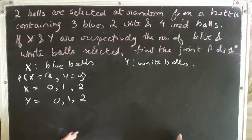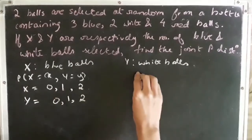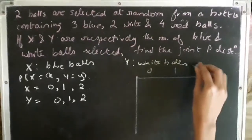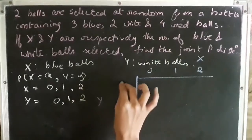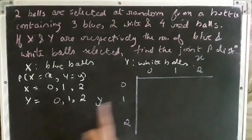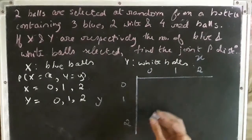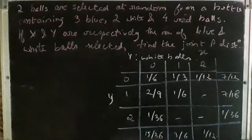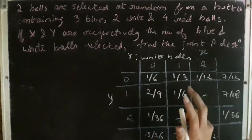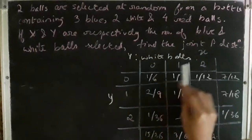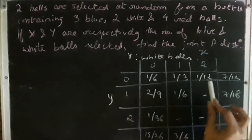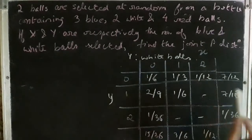We will form a joint probability distribution table. We write the values that X can take — 0, 1, and 2 — and the values that Y can take — 0, 1, and 2. Note that capital X and capital Y denote the random variables, while small x and small y denote the particular values. Each cell represents the probability of X and Y taking specific values: for example, this cell represents x=1, y=1, and this cell represents x=2, y=0.